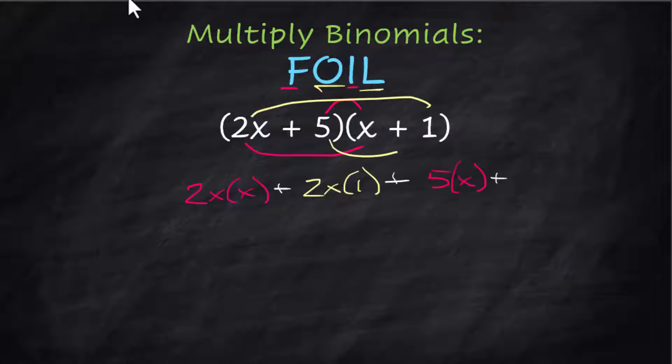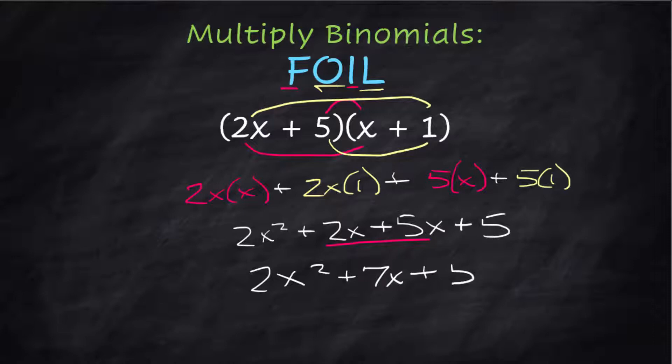L, which is last, which would be 5 times the 1. Multiplying through, 2x times x is 2x squared, plus 2x times 1 is just 2x, plus 5 times x is 5x, plus 5 times 1 is 5. Now combine the like terms in the middle, and we have 2x squared plus 7x plus 5.